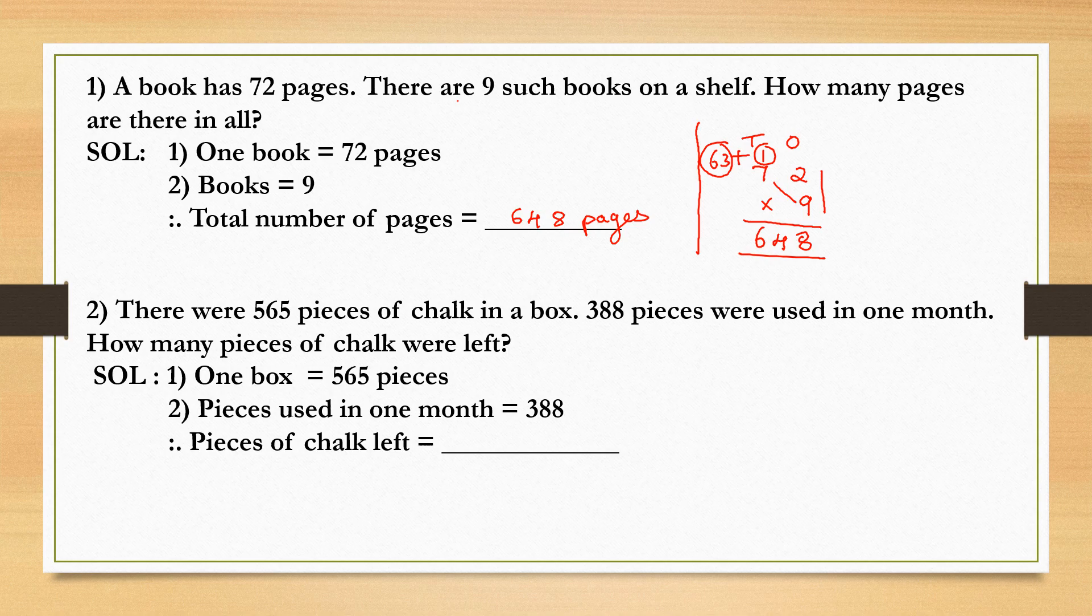Coming to the second question. There were 565 pieces of chalk in a box. 388 pieces were used in one month. How many pieces of chalk were left? Solution: 1 box equals 565 pieces. Second, pieces used in one month equal 388 pieces.